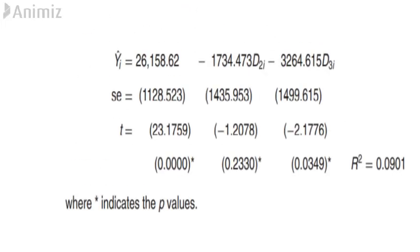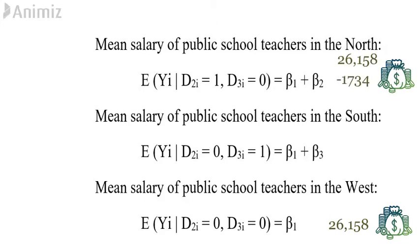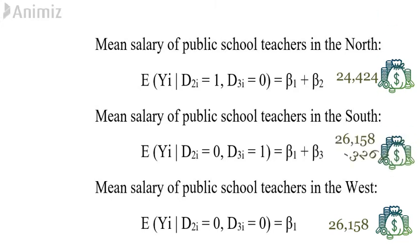Let us now look at the regression results. We need to be careful in interpreting dummy variables in the ANOVA model as it is not the same as our linear regression models. The intercept β1 represents the mean salary of the base region West, and you need to add the slope coefficients to get the mean salaries of North and South. So the mean salary of teachers in the West is $26,158. The mean salary of the teachers in the North is lower by about $1,734 and that of teachers in the South is lower by about $3,265.